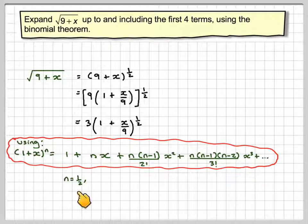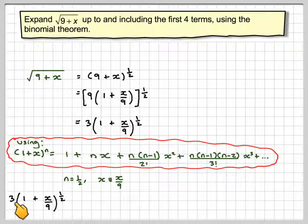We've still got, with n being equal to a half this time, and x being equivalent to x over 9, we've still got that 3 out in front.